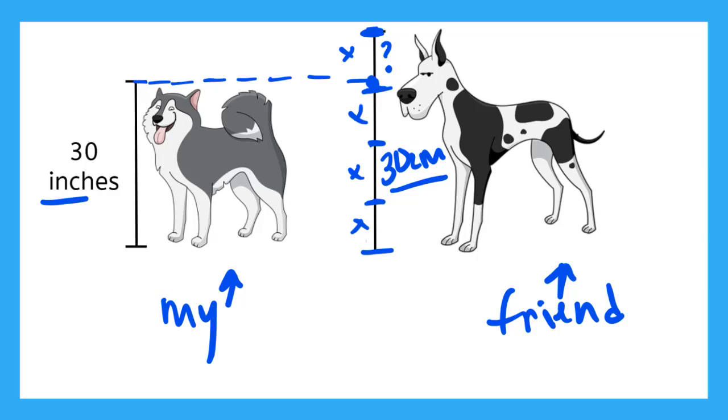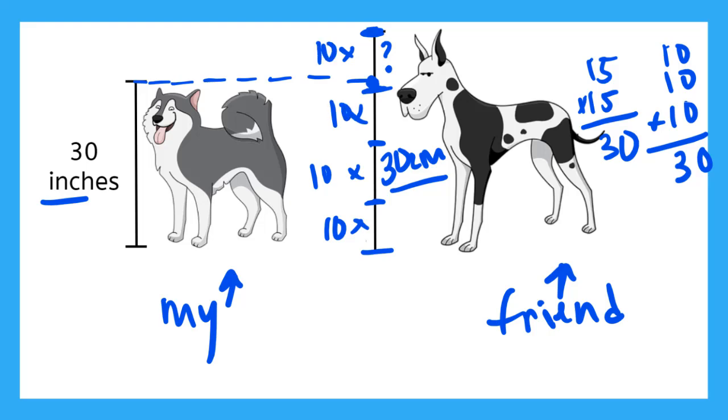So what number goes into 30 three times? Does 15 go into 30 three times? Well, we know 15 plus 15 is equal to 30, and that's only two times. So it's a number that's less than 15. What about 10? If I added 10 together three times, I'd get 30, right? So it looks like each of these is 10 centimeters. So that means my friend's dog is 10 centimeters taller than my dog. And if we have 10 plus 10 plus 10 plus 10, do you know what that equals? 40 centimeters. And that's how tall we're estimating my friend's dog to be.